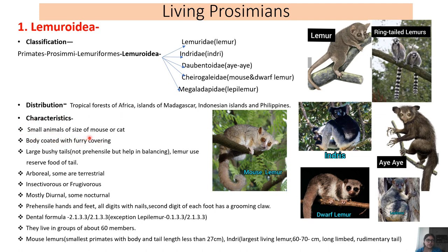The characteristics of lemurs: they are small animals, and their size varies from the size of a mouse to a cat, meaning they are very small animals. Their body is coated with a furry covering, and they have large bushy tails. These bushy tails function as a food reservoir — lemurs use the reserve food stored in the tail when needed. The large bushy tails are not prehensile, meaning they are not used for grasping, but they help in balancing.